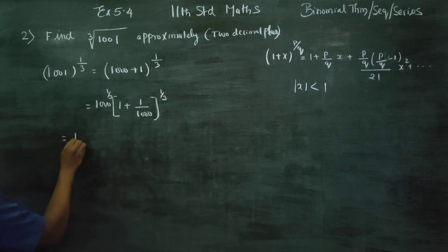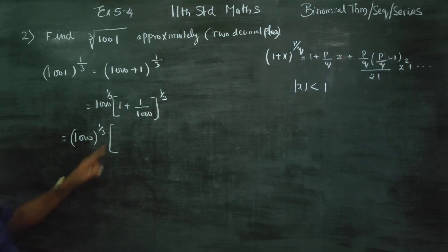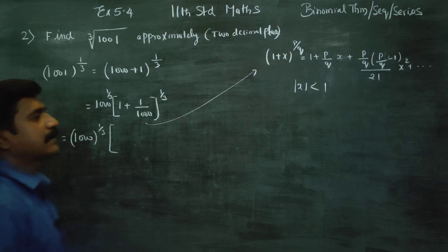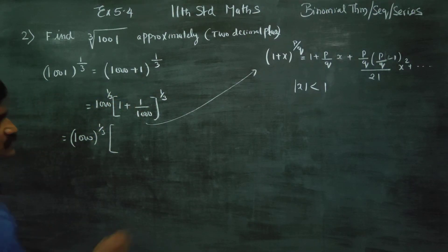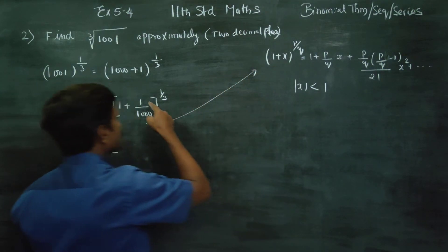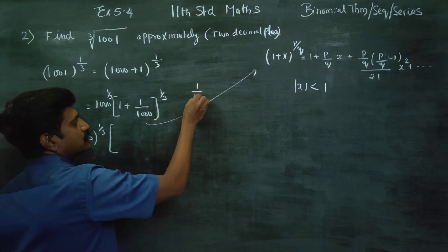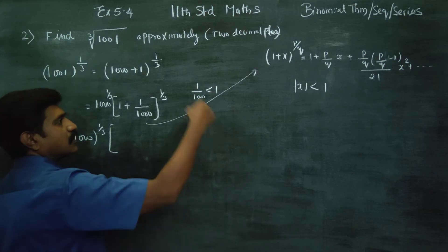This can be written as 1000 whole power 1 by 3. Now, you can use your theorem. We know that 1 by 1000 is less than 1. So, this is the formula.